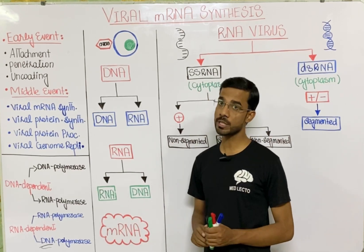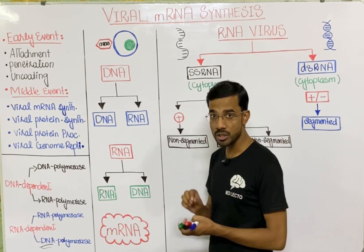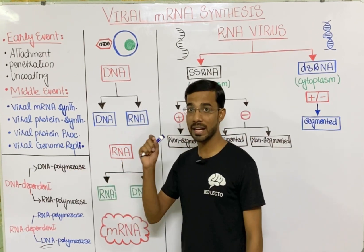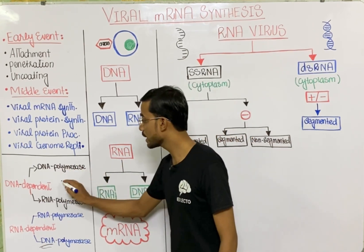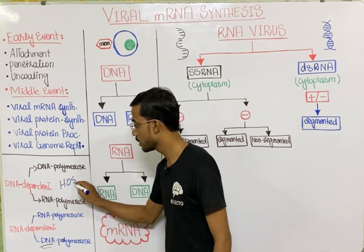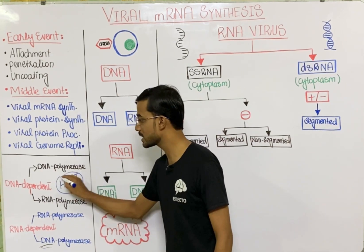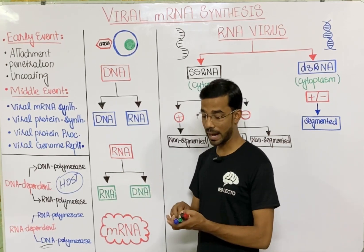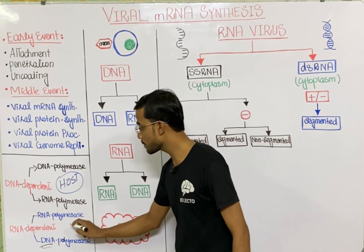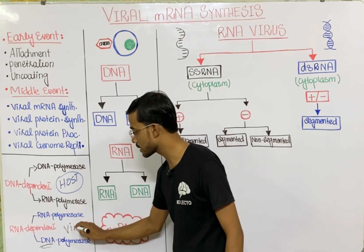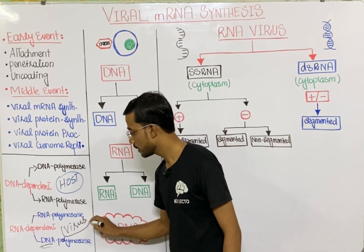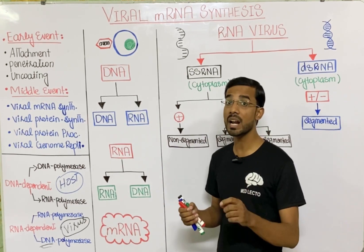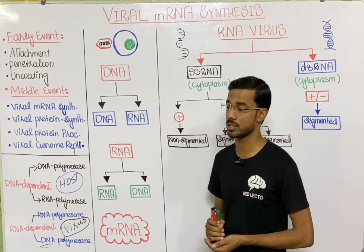The most important point is that in most cases the DNA dependent category is actually present in the host cell. And the RNA dependent polymerase actually comes from the virus — that is the most important thing in the majority of situations, though some exceptions can also exist.